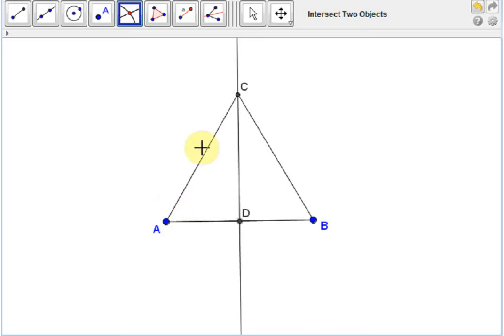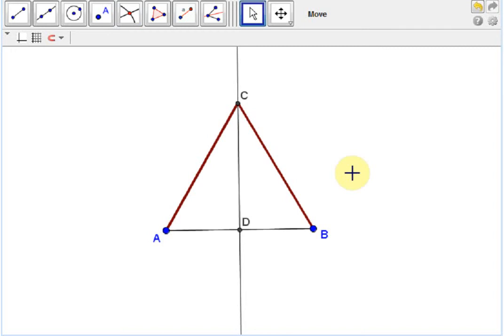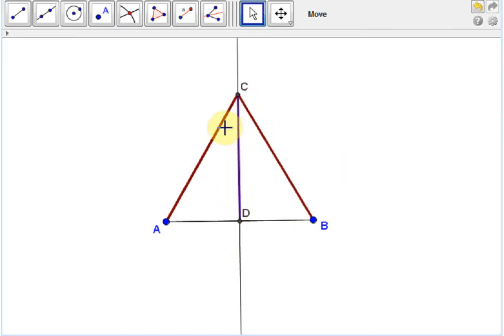First, we know that AC and BC are equal because they're sides of an equilateral triangle. Next, we know that the side CD is equal to itself. And finally, of course, this angle bisector CD bisects this angle ACB.